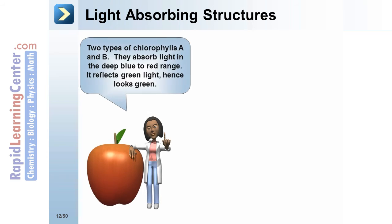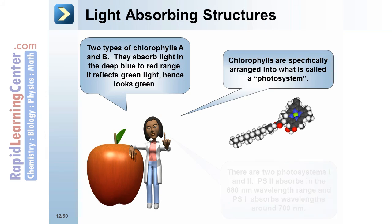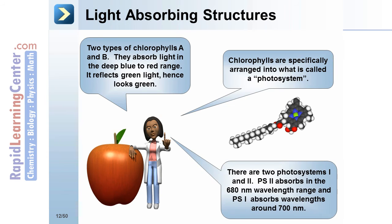Light absorbing structures. Two types of chlorophylls, A and B. They absorb light in the deep blue to red range. It reflects green light, hence looks green. Chlorophylls are specifically arranged into what is called a photosystem. There are two photosystems, 1 and 2. Photosystem 2 absorbs in the 680 nanometer wavelength range, and photosystem 1 absorbs wavelengths around 700 nanometers.